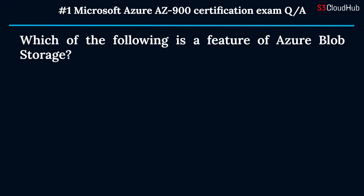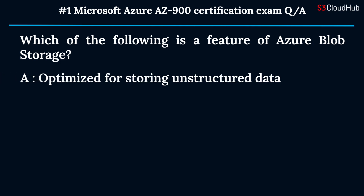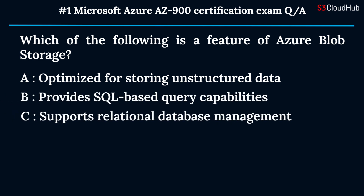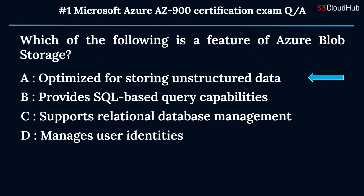The first question is: which of the following is a feature of Azure Blob Storage? Option A: optimized for storing unstructured data. Option B: provides SQL-based query capabilities. Option C: supports relational database management. Option D: manages user identities. The correct answer is option A: optimized for storing unstructured data.